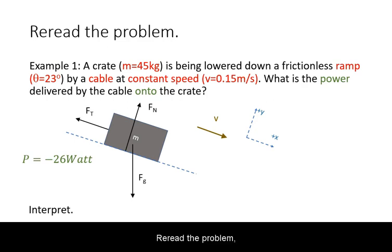Re-read the problem and make sure your answer is sensible. Power is a scalar, hence its negative sign is not a direction. Rather, our answer means that the cable is taking away energy from the object at a certain rate.